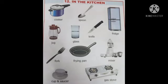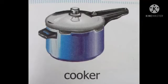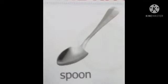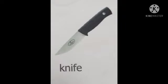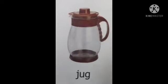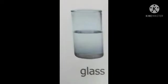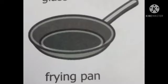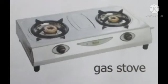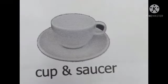Those are cooker, spoon, fridge, knife, jug, glass, fork, frying pan, mixer, gas stove, cupboard, saucer. These are the things we can find in a kitchen.